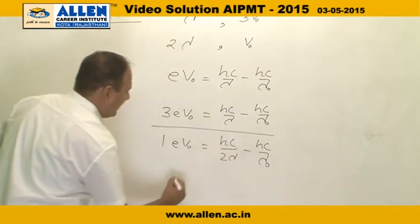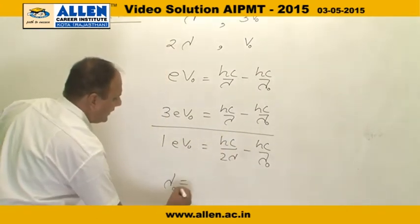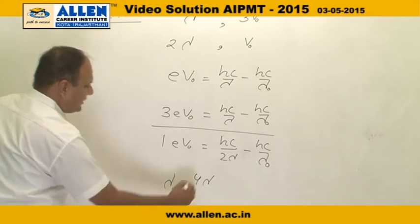By dividing and solving, we will get lambda0 equals to 4 lambda. So option number 1 is correct.